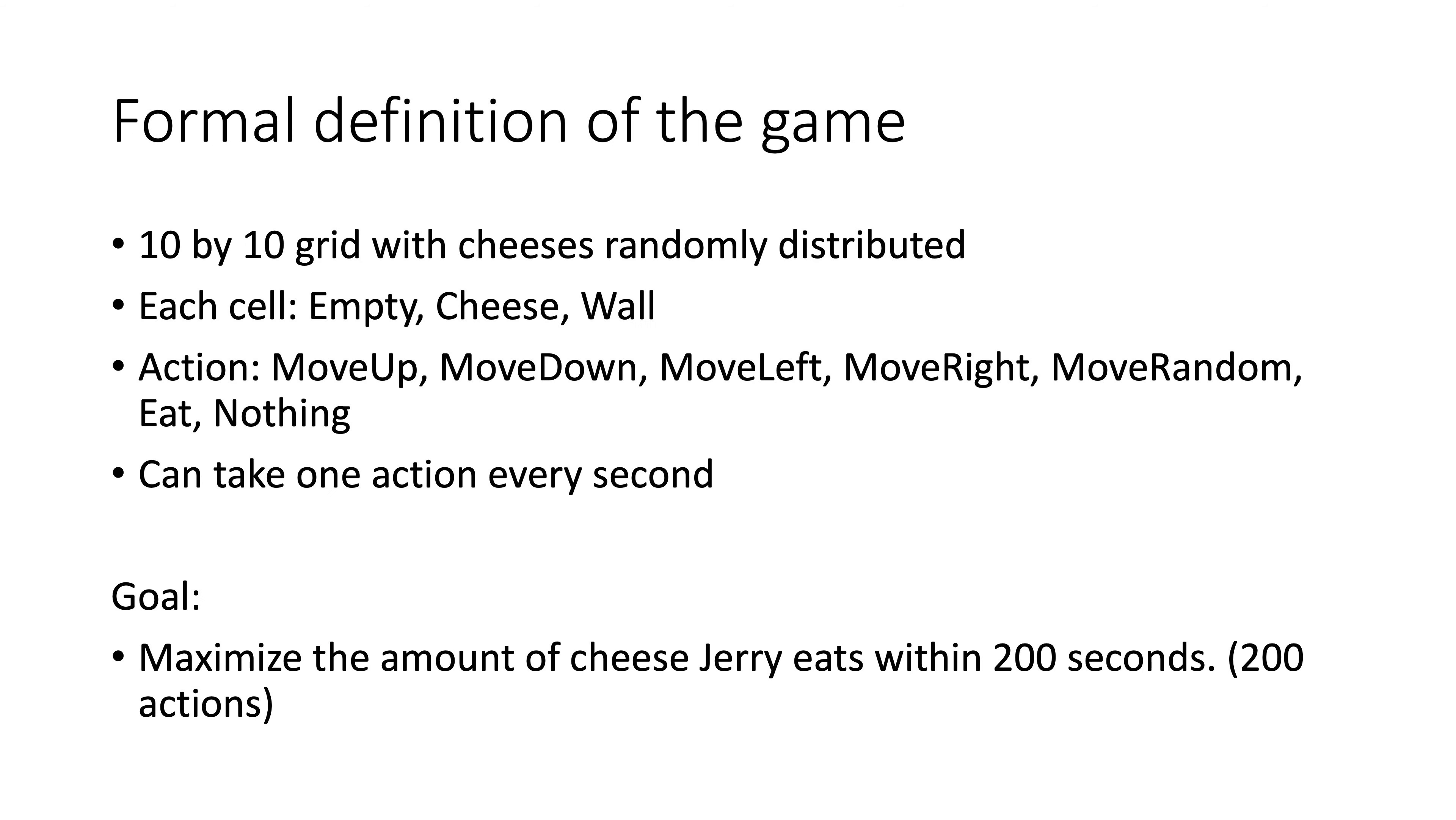Here is a formal definition of the game. The map is 10 by 10 surrounded by walls. Each cell can be either empty, cheese or a wall. Jerry can take one of the seven actions, including moving to four directions, moving to a random direction, eating, and doing nothing. Each action takes one second and Jerry has 200 seconds, meaning he can take 200 actions in total. The goal is to maximize the amount of cheese Jerry eats within 200 seconds.